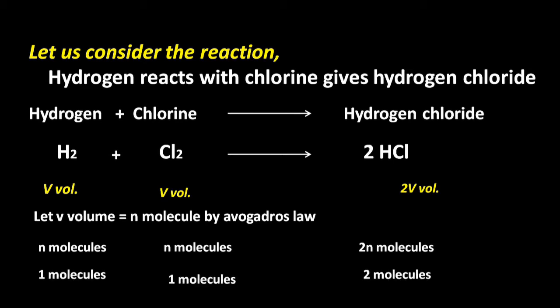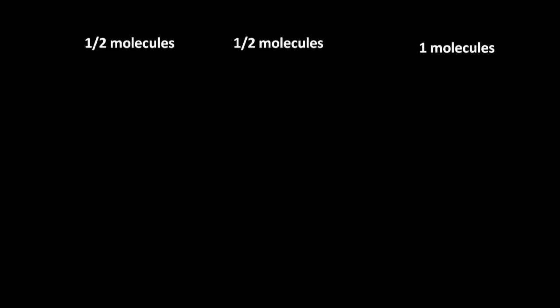Therefore, if we replace N by 1: 1 molecule of hydrogen combined with 1 molecule of chlorine gives 2 molecules of hydrogen chloride. By dividing with 2: 1/2 molecule of hydrogen combined with 1/2 molecule of chlorine gives 1 molecule of hydrogen chloride.